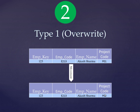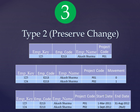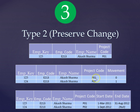Let's move on to Type 2, or SCD 2. It is a more sophisticated approach. Here we have our base table and a separate column called 'movement'. Since joining, if Akash is on Project 01, the movement is blank. When a movement happens it becomes Movement 1 and the new project code is assigned to Akash. By querying the latest movement you can identify the current project and also see all previous projects.